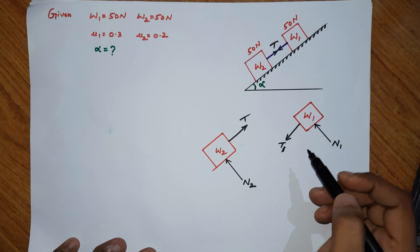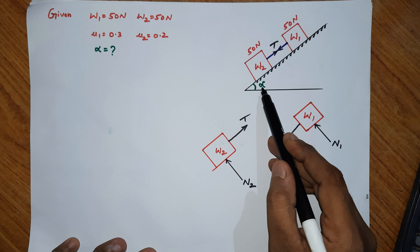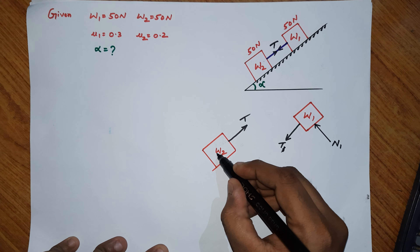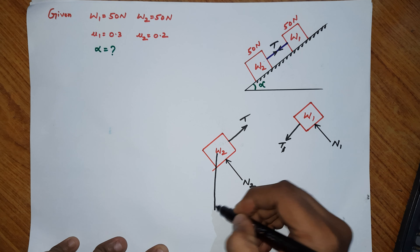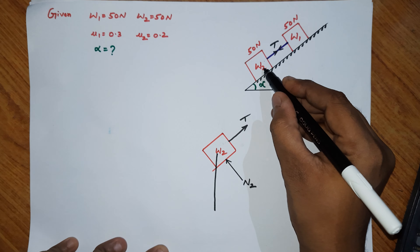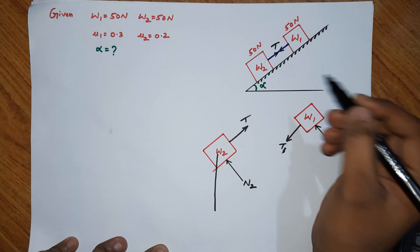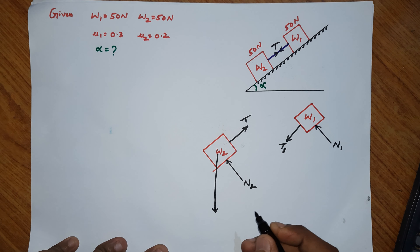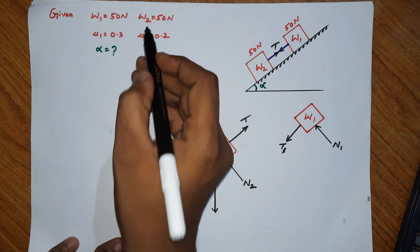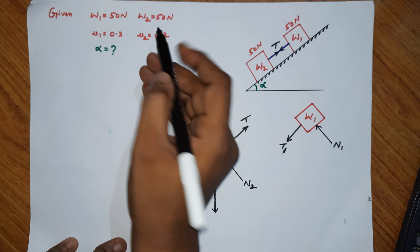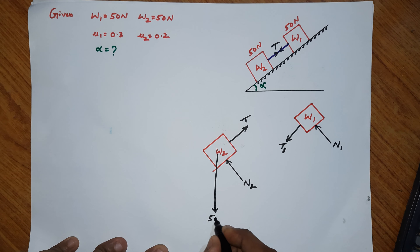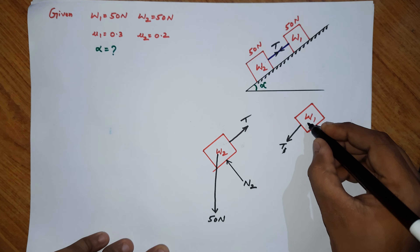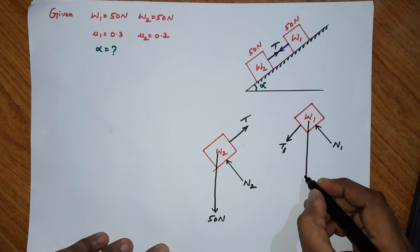The inclined plane makes angle alpha with the horizontal. Now we need to represent the weights. Weight always acts downwards — W2 weight is 15 newtons downward and W1 weight is also 15 newtons downward.